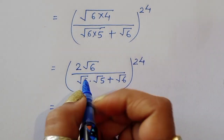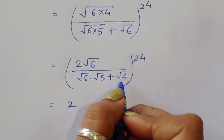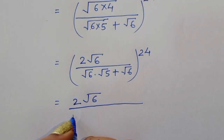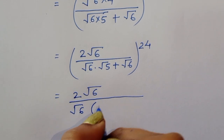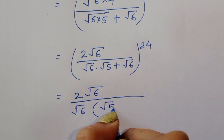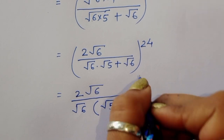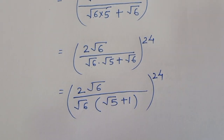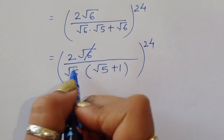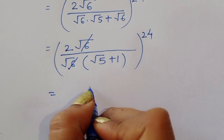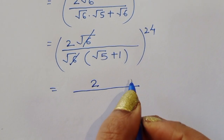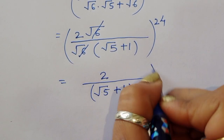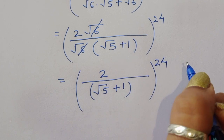Now we can see √6 in the numerator and √6 factored from the denominator, so they cancel. We are left with 2 divided by (√5 + 1), all raised to the power 24.